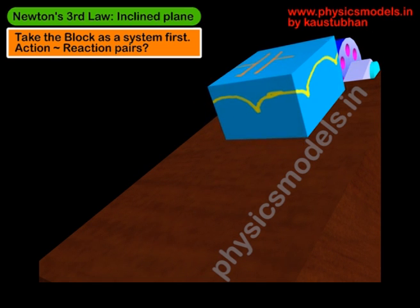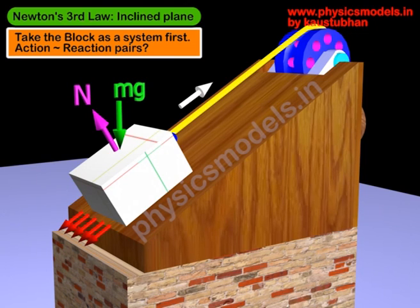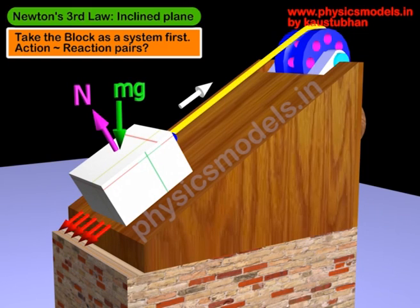Now let's look at what forces are acting, in a different view. You have the weight mg acting vertically downwards towards the center of the earth. The block is attracted towards the center of the earth, and the block also attracts the earth towards itself as per the gravitational law — they form an action-reaction pair. The block and the inclined plane do not form an action-reaction pair, because both mg and the normal reaction n are acting on the same object, the block, and therefore they do not form an action-reaction pair.